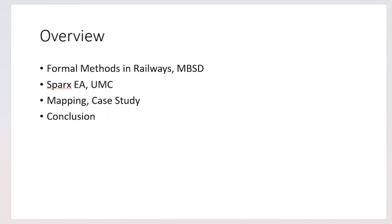We start the presentation by talking about formal methods in railways and model-based software engineering. Then we introduce Sparks Enterprise Architect and UMC, the two tools used in this paper. Afterwards, we describe the mapping between the two tools, the application to a railway domain case study, and the conclusion.